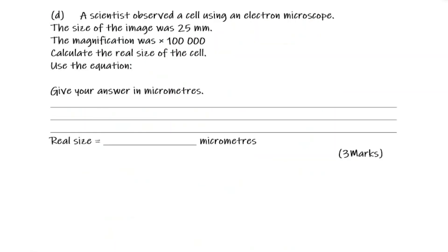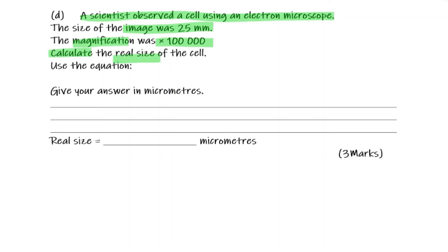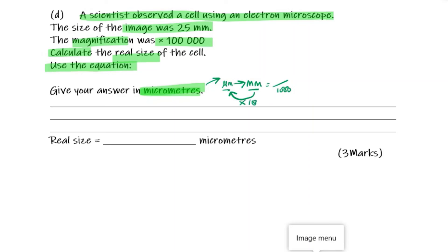Part D of question three: a scientist observed a cell using an electron microscope. The size of the image is 25 millimetres and the magnification was ×100,000. Calculate the real size of the cell — the answer must be given in micrometres. Quick recap: to convert micrometres to millimetres, divide by 1,000. To convert millimetres to micrometres, multiply by 1,000.